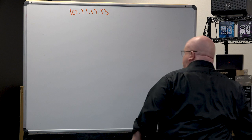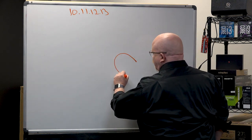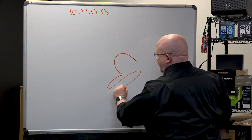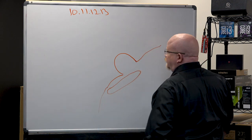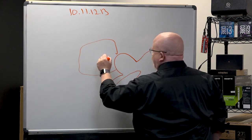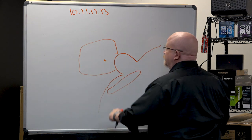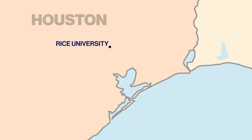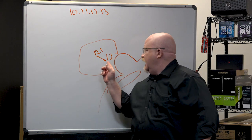Now I'm going to concentrate on Rice University. There's Galveston Bay, Galveston Island, the southeast coast of Texas, Houston — and right about here is Rice University. Rice University is going to be '12.' Now the problem is there are a lot of people in the Houston area who also want to be connected to the internet. So over at University of Houston, instead of connecting to the big top-level, they're going to get their own little router, and Rice University is going to call that router 12.1.